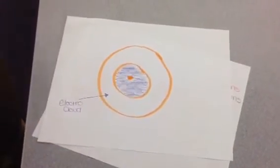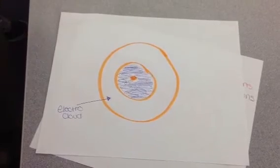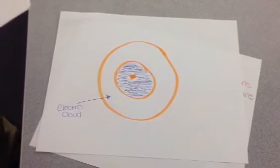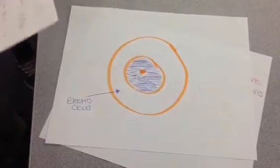Electrons have a size of 1 and a charge of negative 1, with 17 ions. They are located outside of the nucleus.